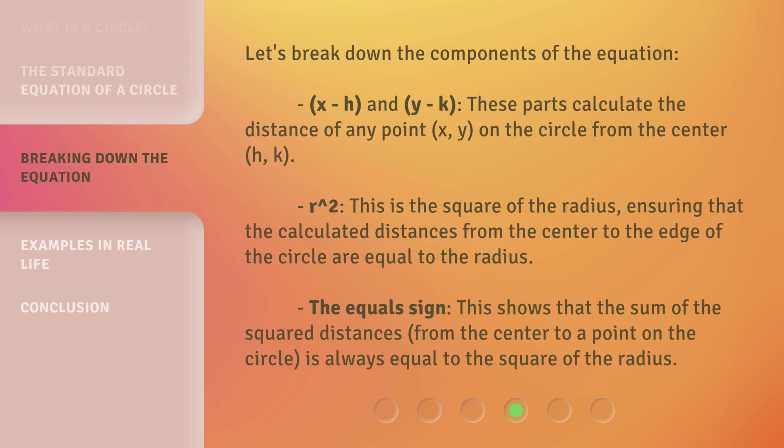r²: This is the square of the radius, ensuring that the calculated distances from the center to the edge of the circle are equal to the radius. The equals sign: This shows that the sum of the squared distances from the center to a point on the circle is always equal to the square of the radius.